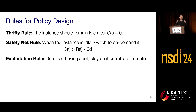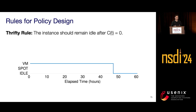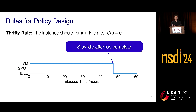By investigating this problem further, we found three basic rules that policies trying to solve it should follow: the Thrifty rule, the Safety Net rule, and the Exploitation rule. The Thrifty rule states the instance should remain idle after CT equals zero — quite intuitively, once the job is completed, no more instances should be launched, as that would waste cost while making no additional progress.